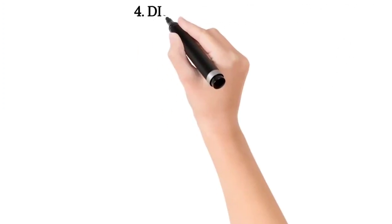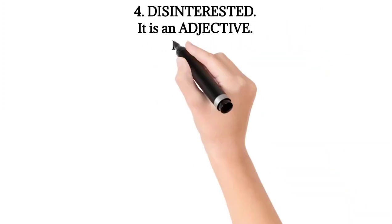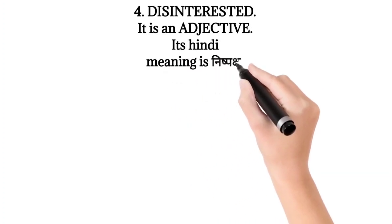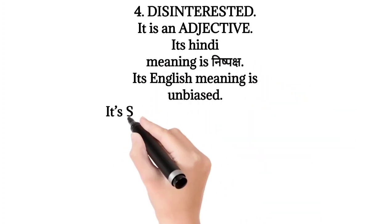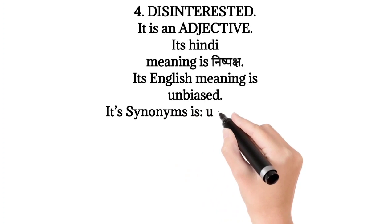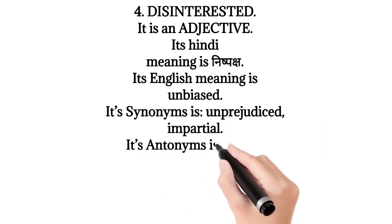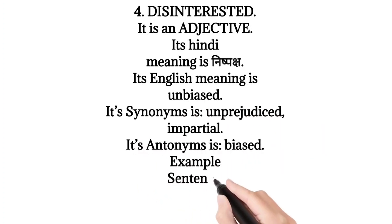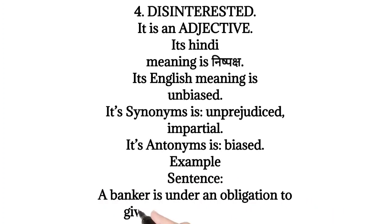4. Disinterested. It is an adjective. Its Hindi meaning is Nishpaksha. Its English meaning is Unbiased. Its synonyms are Unprejudiced, Impartial. Its antonym is Biased. Example sentence: A banker is under an obligation to give disinterested advice.